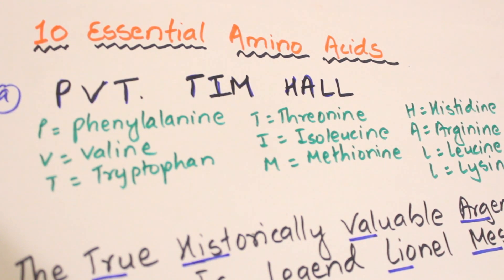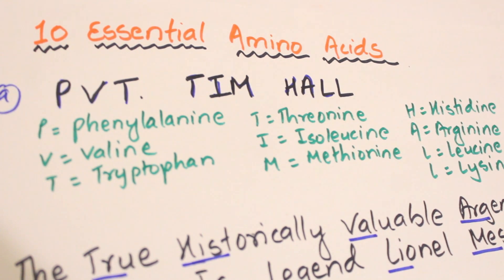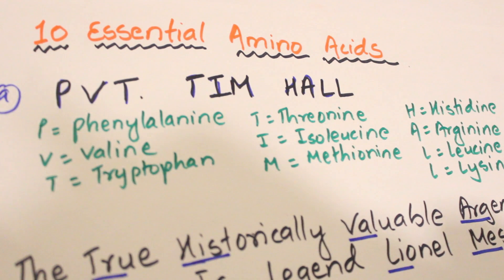Out of 20, 10 are essential amino acids. Essential means those which are not synthesized in our body — they should be provided from outside through the diet. The remaining are non-essential amino acids, which are synthesized in our body.